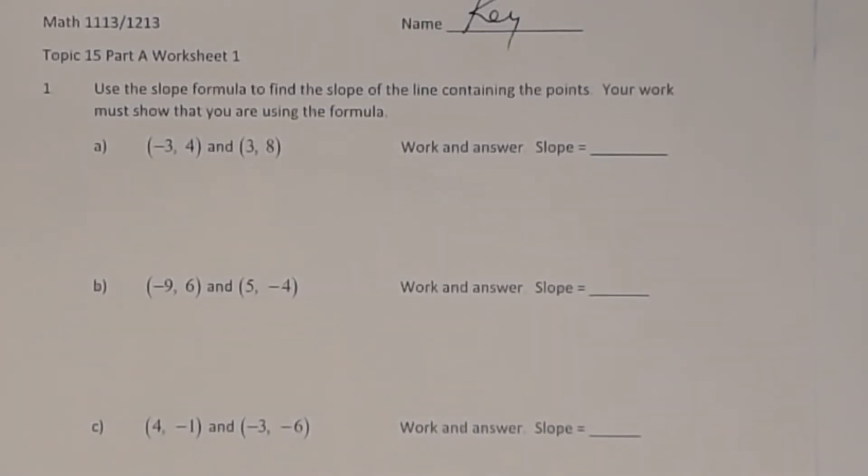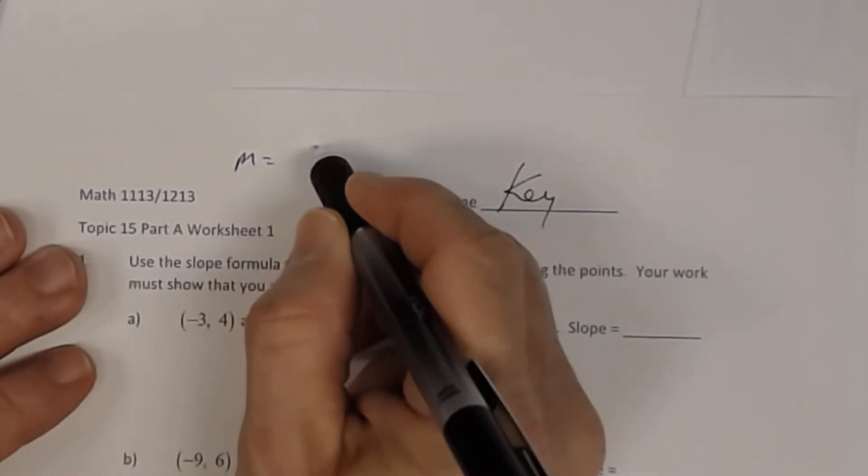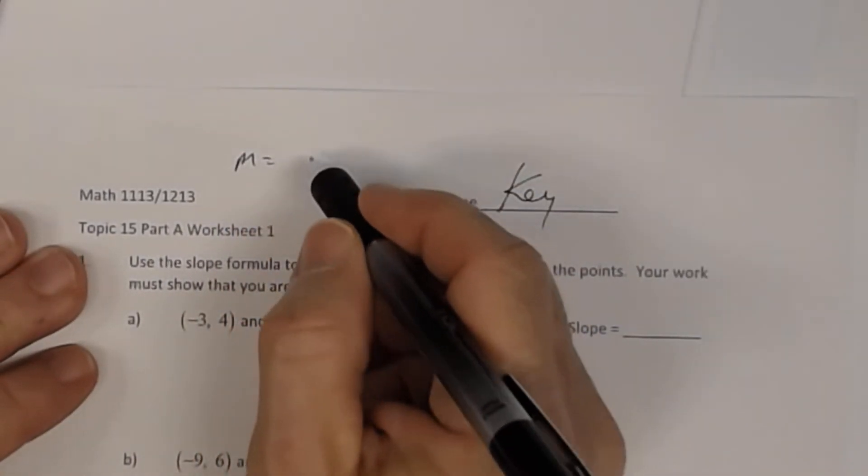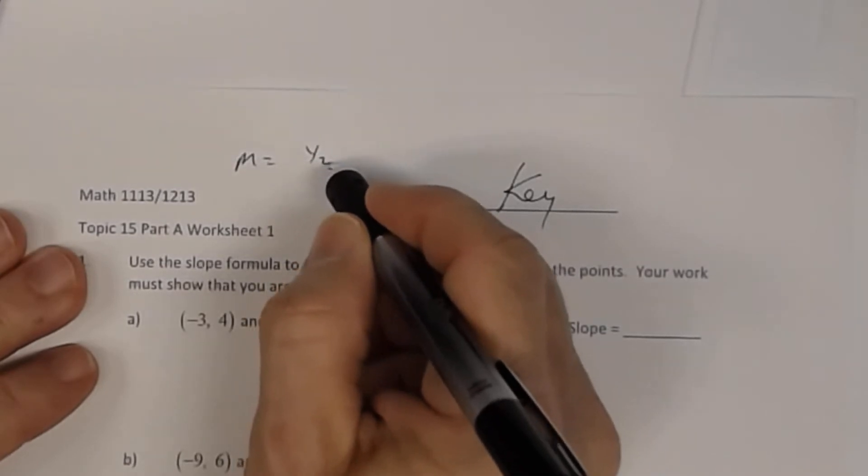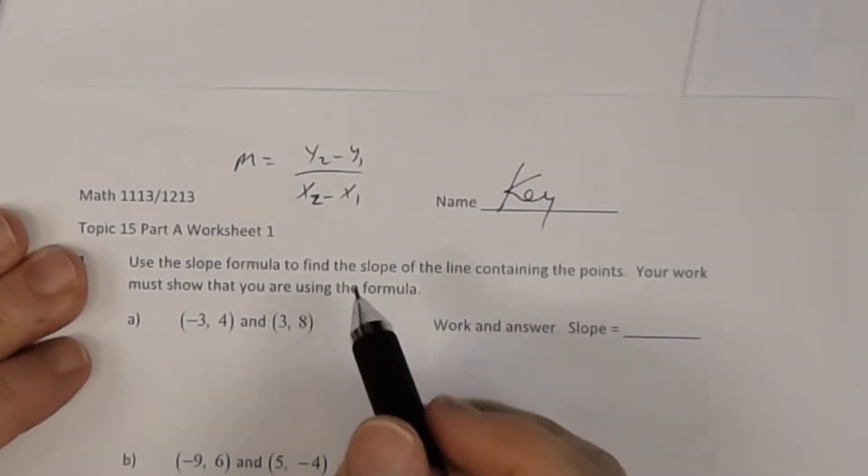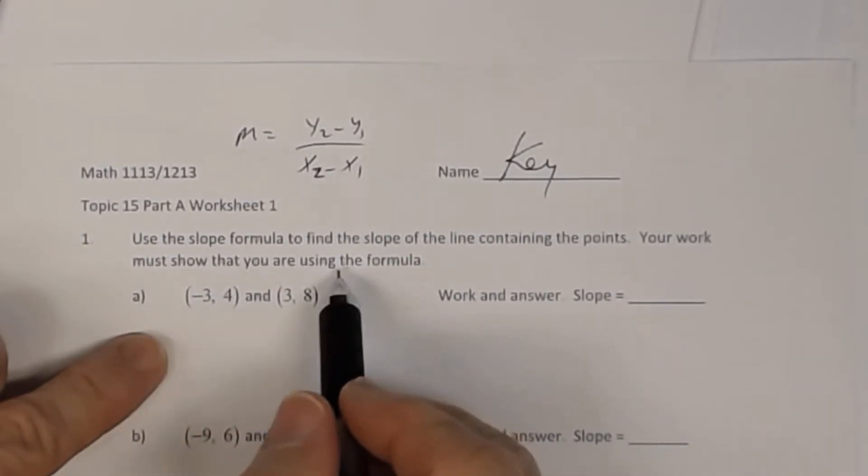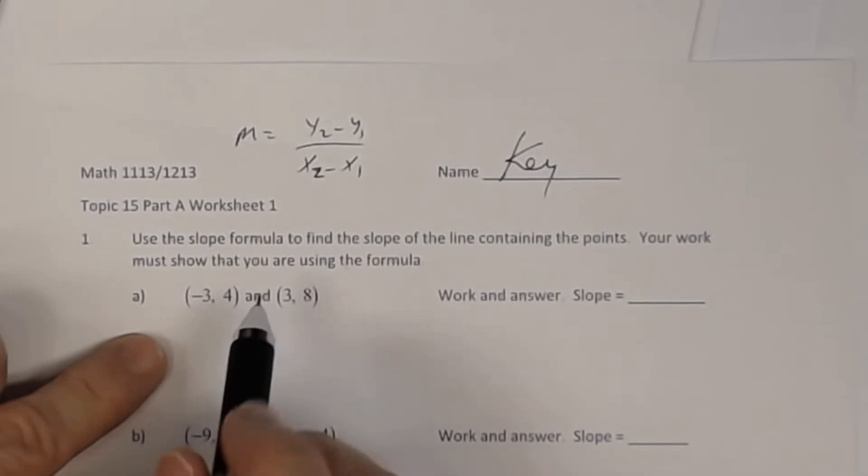This is the key to Topic 15 Part A. In number one, you want to find the slope of the line that contains those two points, and so you have to use the slope formula to show that you are using the formula. Remember, the slope formula is: slope equals y2 minus y1 divided by x2 minus x1. When it says make sure that you must show that you're using the formula, what I'm interested in seeing is this.